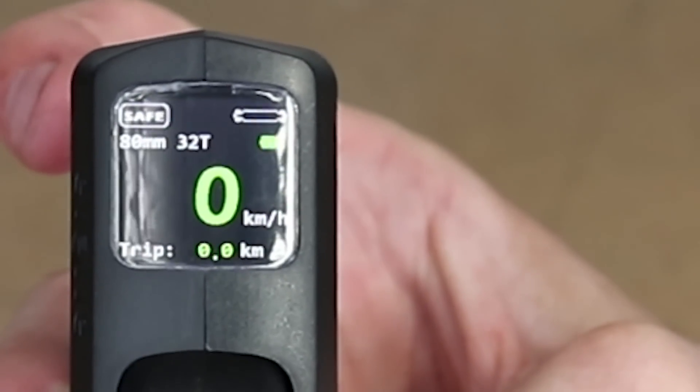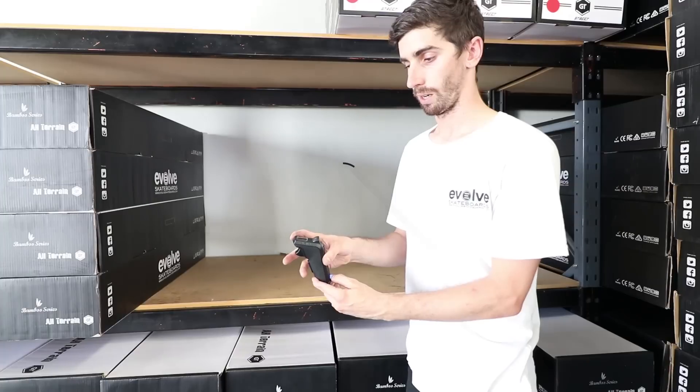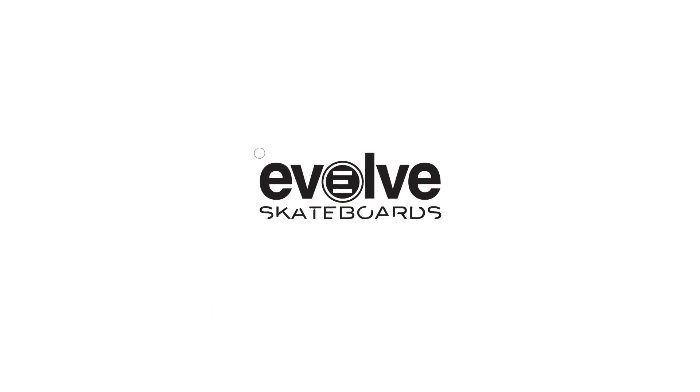When we press power button, it returns to the main screen. Then we can turn the remote off. That's done.